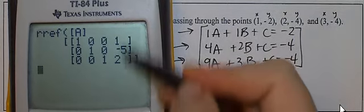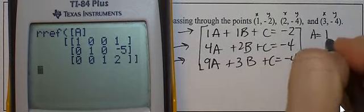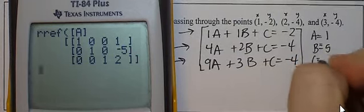Okay, what does this tell me? It tells me A is 1, B is negative 5, and C is 2.